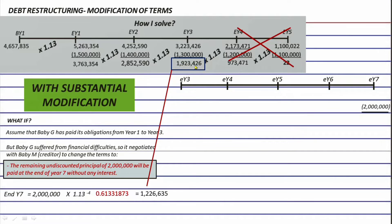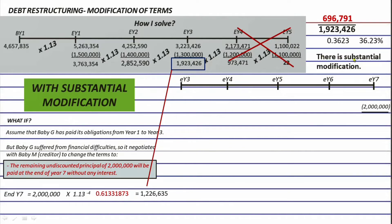We compare this present value to the old loan balance at the end of year three. The absolute difference is 696,791. Dividing by the old balance of 1,923,426 gives 0.3623, or 36.23%. Since the difference is more than 10% of the old liability, we conclude there is substantial modification.